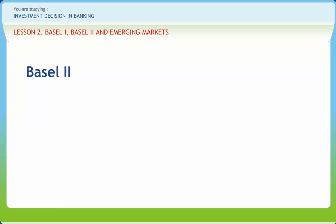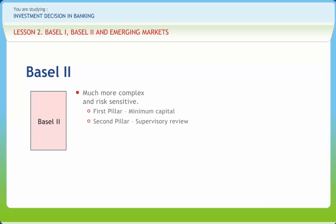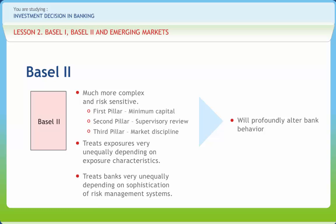By the late 1990s, growth in the use of regulatory capital arbitrage led the Basel Committee to begin work on a new capital regime — Basel II. The effort focused on using banks' internal rating models and internal risk models. In June 1999, the Committee issued a proposal for a new capital adequacy framework to replace the 1988 Accord. Basel II consists of three pillars: minimum capital requirements, supervisory review, and effective use of market discipline. It treats exposures very unequally depending on exposure characteristics, and treats banks very unequally depending on sophistication of risk management systems.